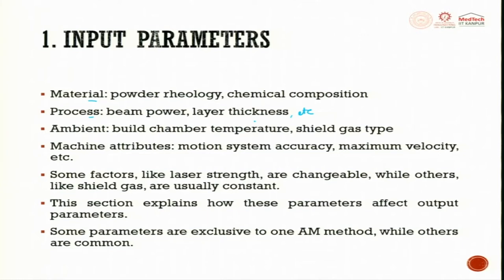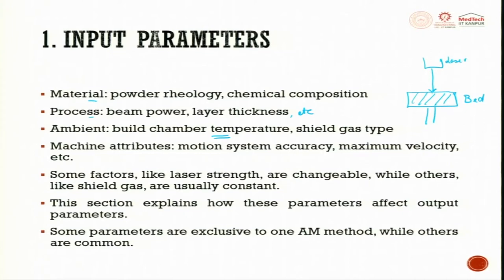Layer thickness varies from 50 microns to 100 microns. Next is the ambient build chamber temperature. When you have a bed where you are exposing the laser, the temperature at the laser hit point may go to 700°C, and then come down to room temperature of 35°C. This represents a gradient of about 650°C in a short instant, which induces thermal residual stresses that may lead to crack formation. To avoid this, we try to achieve smooth gradation — from 700°C to 400°C, then 100°C, then 35°C — using a temperature-controlled build chamber.